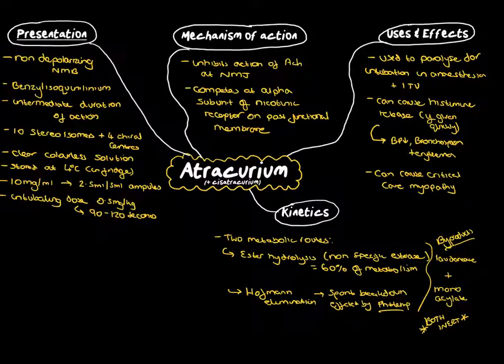The speed at which Hoffman elimination occurs is dependent on temperature and pH, therefore if you're hypothermic or you're acidotic, it slows down the ability for Hoffman elimination to continue. What this means with both of these is that metabolism of atracurium is independent of hepatic and renal function, which is important in people who've got CKD or where you're concerned about their ability to clear the drug.